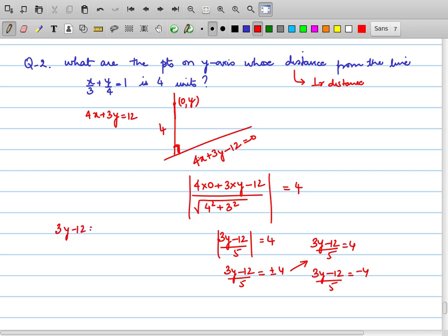So 3y minus 12 equals 20. 3y equals 32. y comes out to be 32 by 3. Therefore one of the coordinates is (0, 32/3). If we solve the next equation, 3y minus 12 equals minus 20. 3y equals minus 20 plus 12. Therefore 3y comes out to be minus 8. Therefore y comes out to be minus 8 by 3. Therefore the other coordinate that is possible from which the perpendicular distance on this line will be 4 is (0, -8/3).